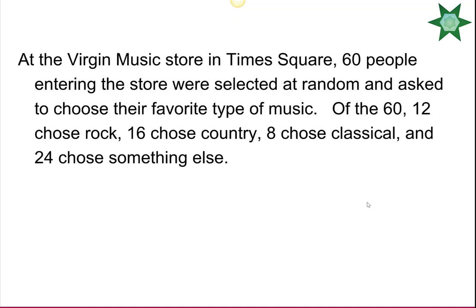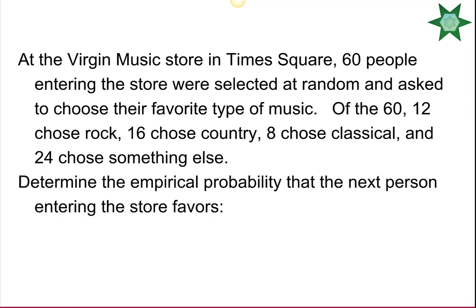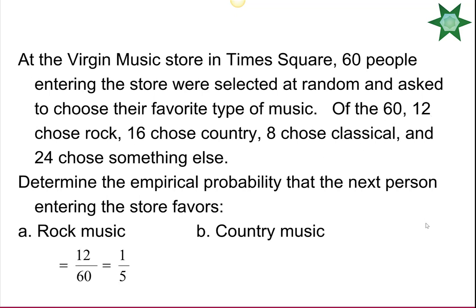At Virgin Music Store in Times Square, 60 people entering the store were selected at random and asked to choose their favorite type of music. Of the 60: 12 chose rock, 16 chose country, 8 chose classical, and 24 chose something else. The empirical probability the next person favors rock is 12 over 60, or 1/5. Country was 16 people, so 16 over 60, or 4 over 15.